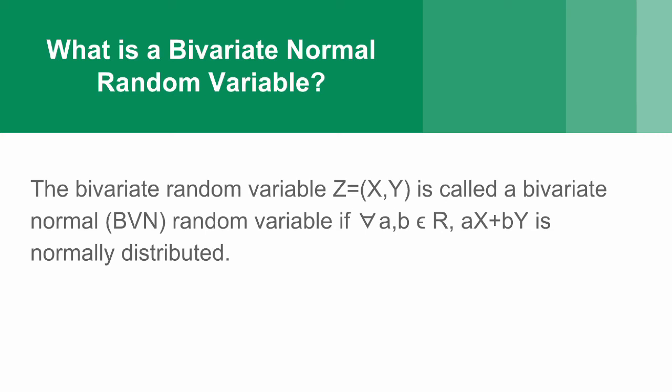If z is a bivariate normal random variable, then it means that every linear combination of x plus y is normally distributed. So, that's what this says here. For all a and b in the real numbers, ax plus by is normally distributed.